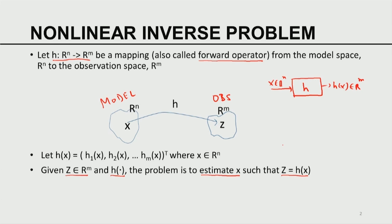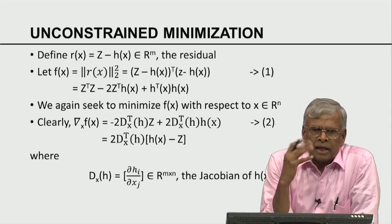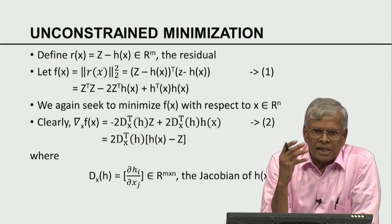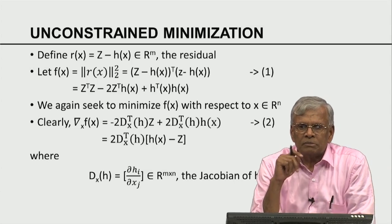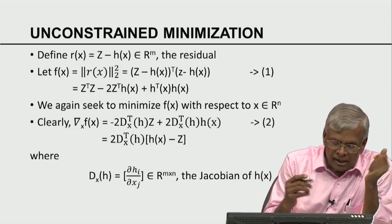In the linear problem, we had a matrix H going from model space to observation space, and the problem was Z equals HX. We are going to characterize this inverse problem again as an unconstrained minimization problem — exactly what we did when we solved the linear least square problems. So we are going to follow the same track of ideas.